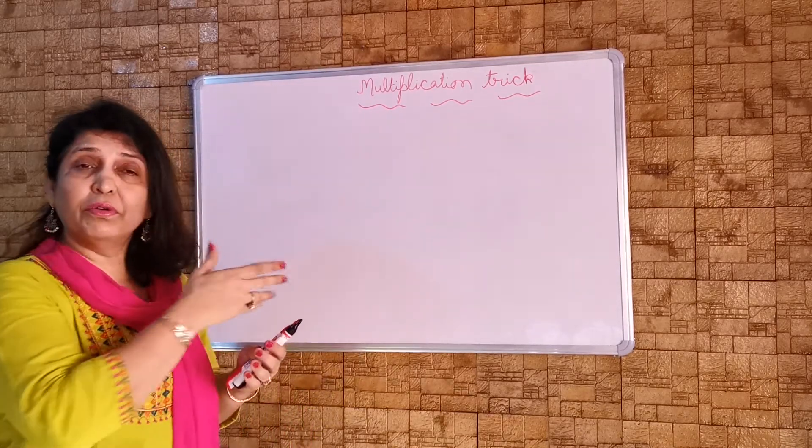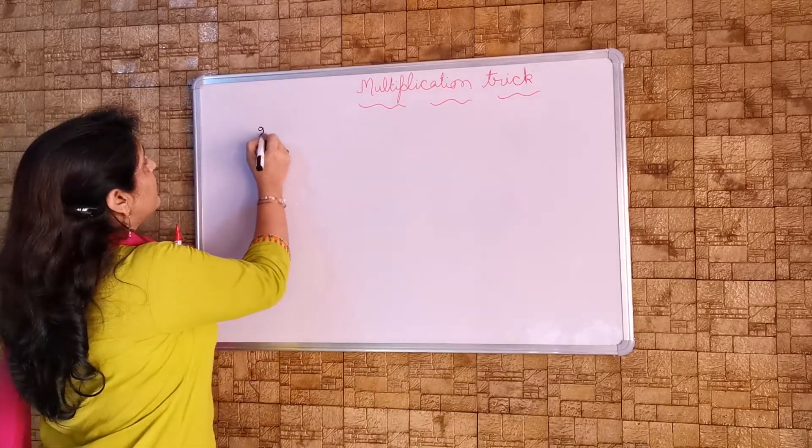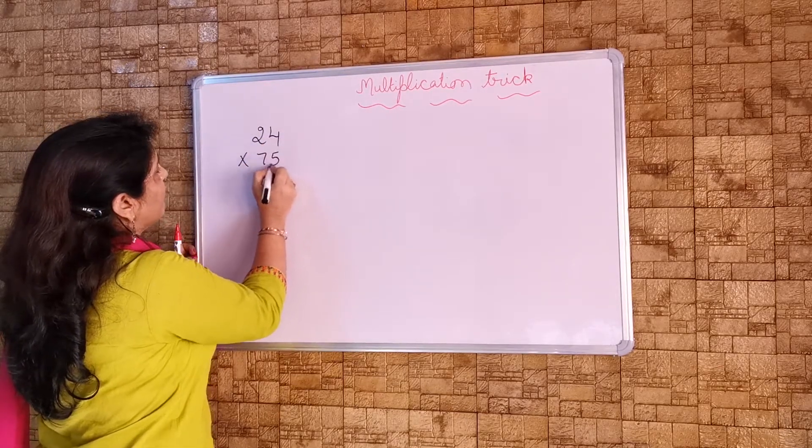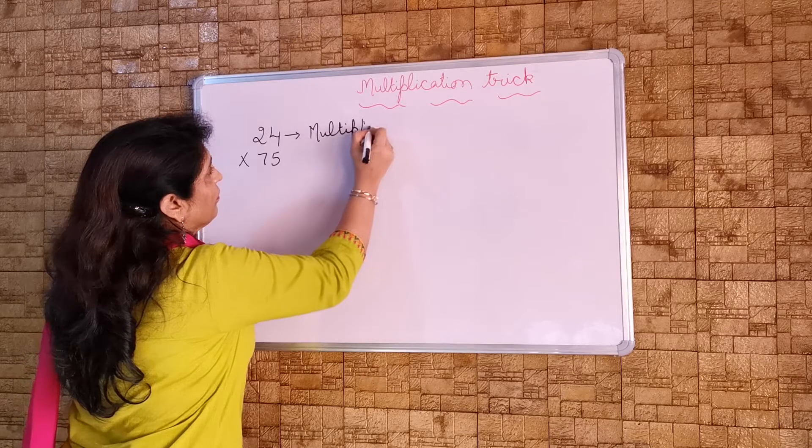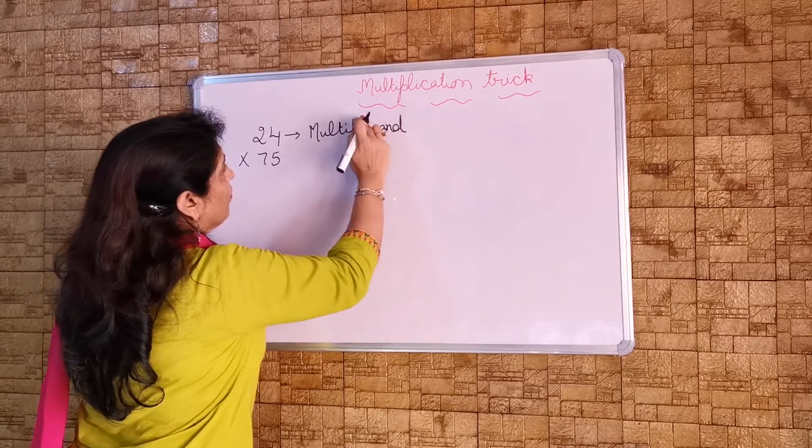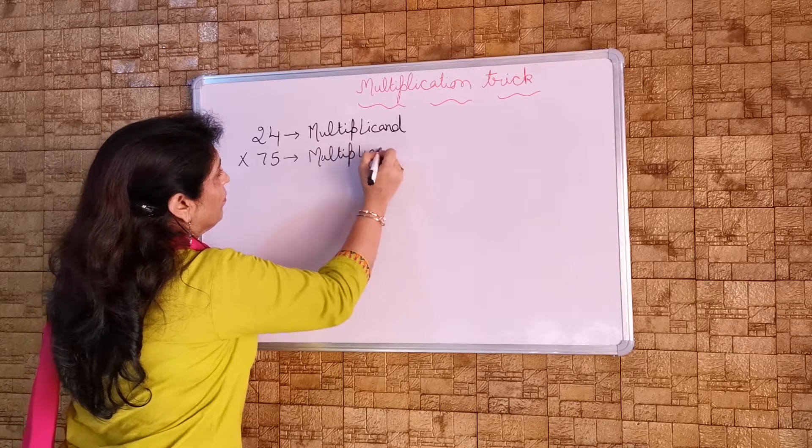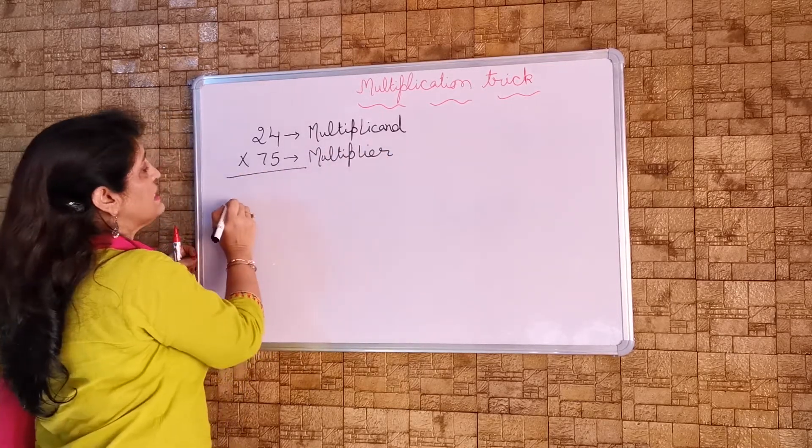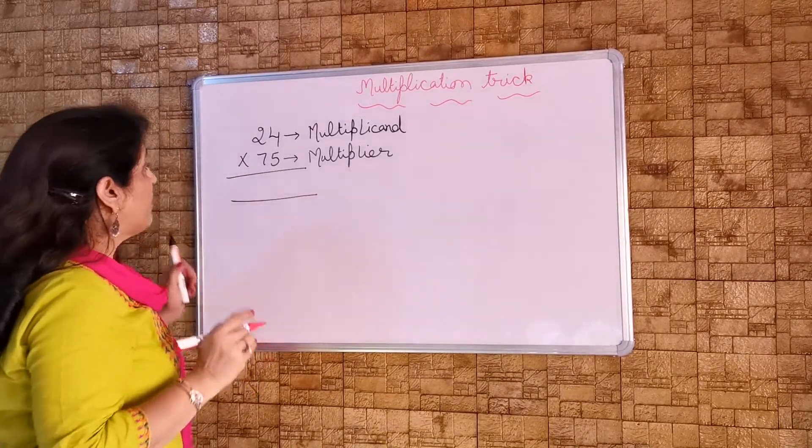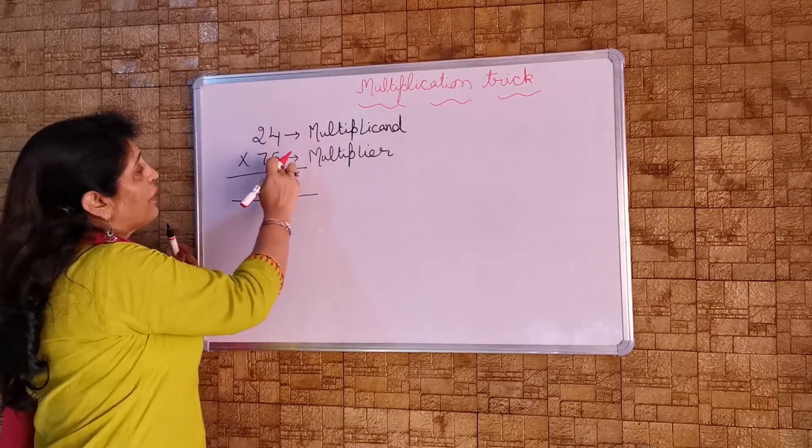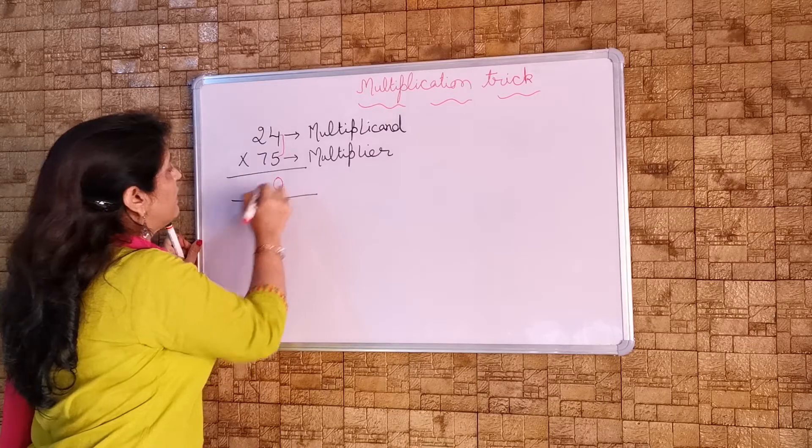But here we have to do the answer in one step only. Like my sum is 24 into 75. As everybody knows 24 is a multiplicand and this is multiplier. Now the answer will be taken out in one go only. For that you have to learn the methodology. My methodology says when the numbers which are on one's position, they have to be multiplied. 4 times 5 is 20 and we will write 0.